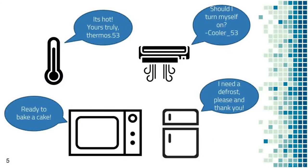Let's look at a simple example. Say you have a smart microwave which can tell you when the oven is hot enough to bake your cake, and you have a thermostat which tells you the temperature and allows you to control it. Going back to the definition, you need to be able to address it uniquely — for example, knowing it is the thermostat from room number 53.